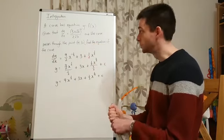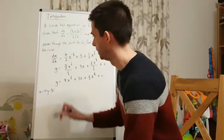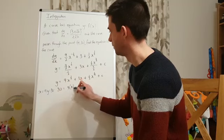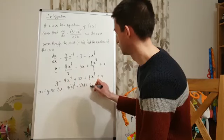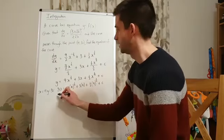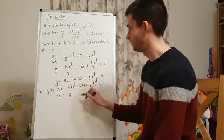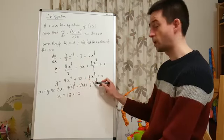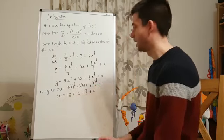Which is that when x equals 4, y equals 30. So, when x equals 4, y equals 30. So, I'm going to substitute those values in. I'm going to put 30 in for y and I'm going to put 4 in for x. So, 30 equals 4 to the power of a half is 2. 9 lots of 2 is 18. 3 lots of 4 is 12. 4 to the power of 3 over 2. Square root it and cube it. So, it's 8. So, I've got plus 8 over 3 plus c.